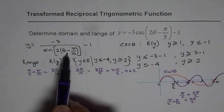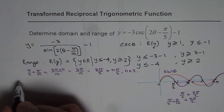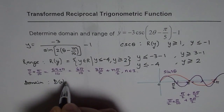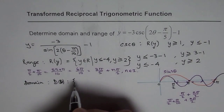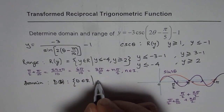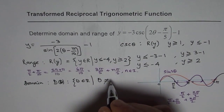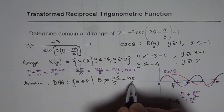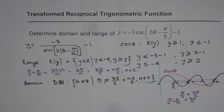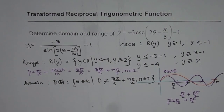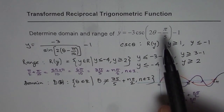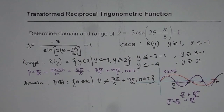Those zeros result in vertical asymptotes, so we have a restriction on the domain. The domain for our function is: θ belongs to the real numbers where θ is not equal to 3π/5 + n × π/2, where n belongs to the integers. That is how you can get the domain for the function. I hope that helps you understand how easily we can find the domain and range for a reciprocal trigonometric function.